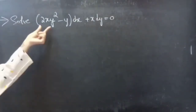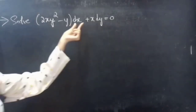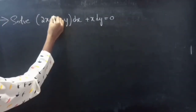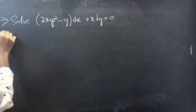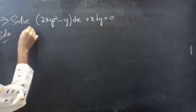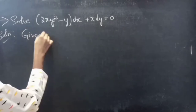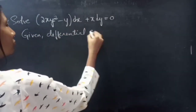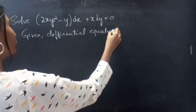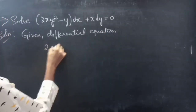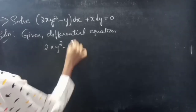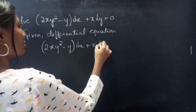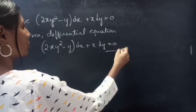Problem. Solve: (2xy² − y) dx + x dy = 0. Consider that equation number 1.